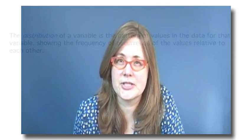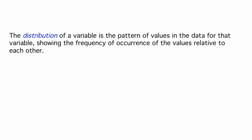We've seen how we might examine the relationship between a categorical and a quantitative variable by seeing how the summary statistics and shape of the quantitative variable differ with the different values of the categorical variable. When we refer to the distribution of a variable, we're talking about the pattern of the values in the data, showing the frequency of occurrence of the values relative to each other.